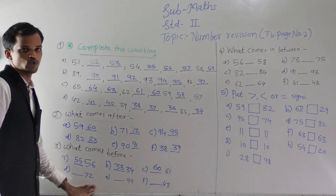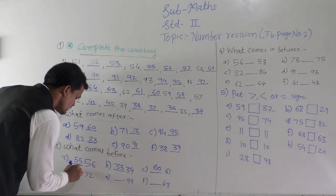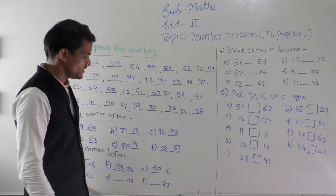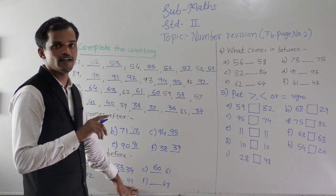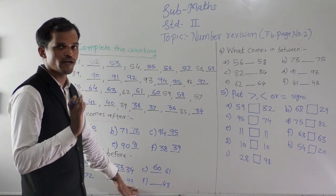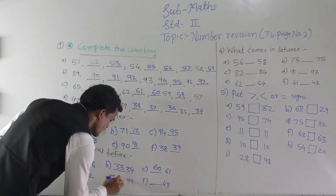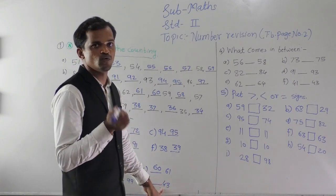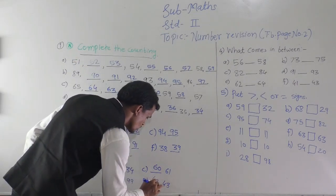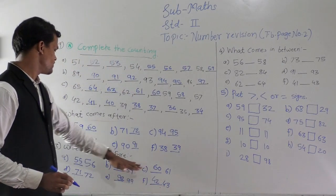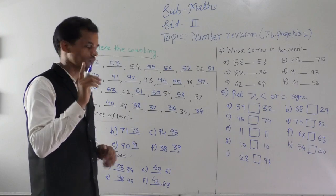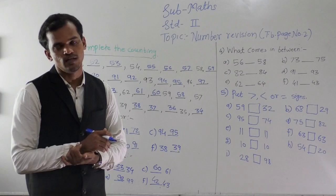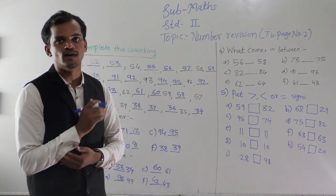Then 72 — one less than 72 is 71, so 71 is the before number of 72. Then 99 — one less than 99 is 98. Before number of 98. Then 43 — before number of 43 is 42. So these examples are before number. Every time you write the previous number of the given number, that is one less than the given number.